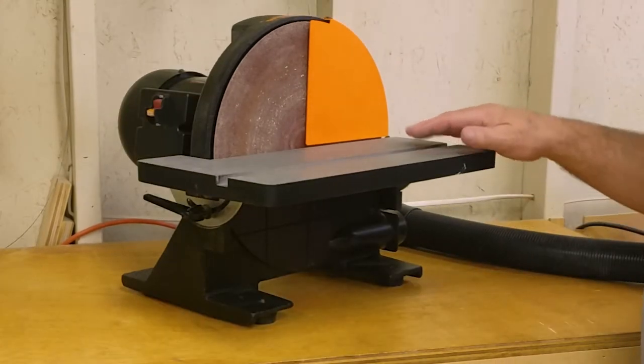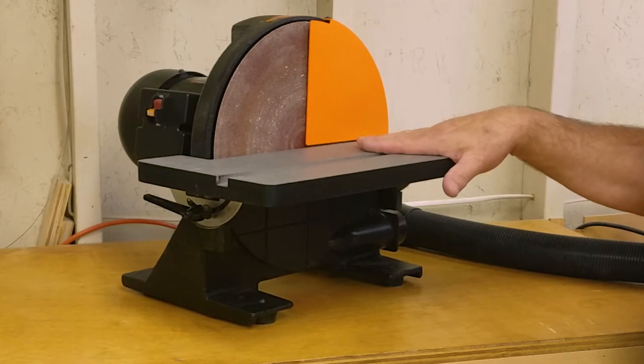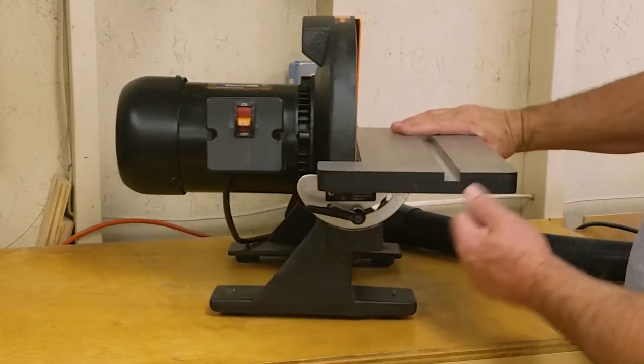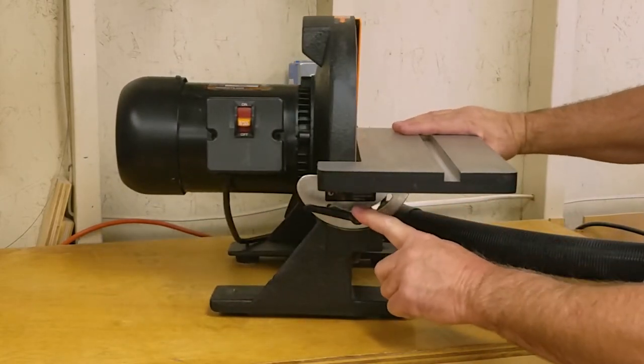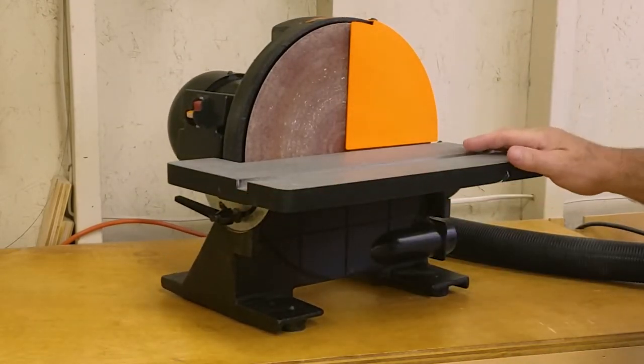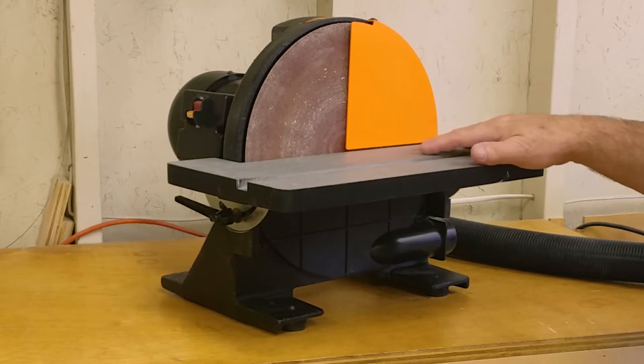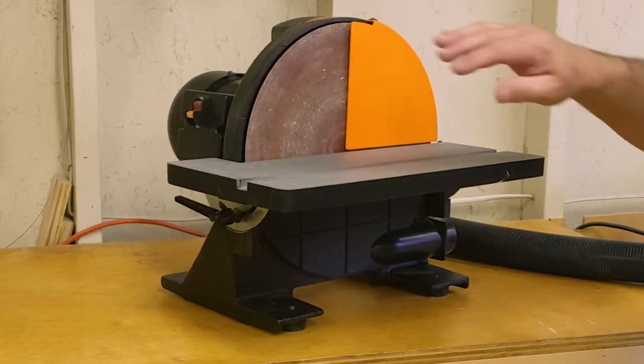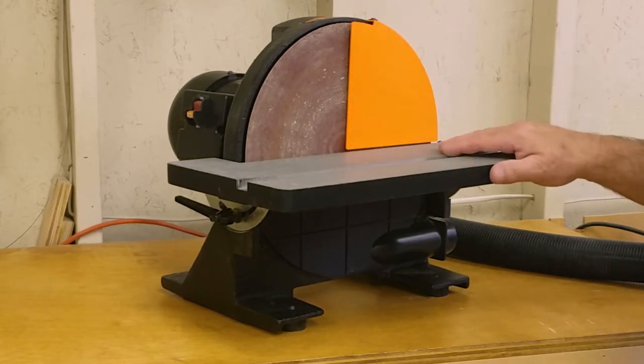When you receive the sander the plate is not installed so you'll have to do that. It's really simple. There's just a bolt on this side and one on the other side. This sander is 120 volt 60 Hertz. It draws 8 amps and the disc turns at 1725 RPMs.